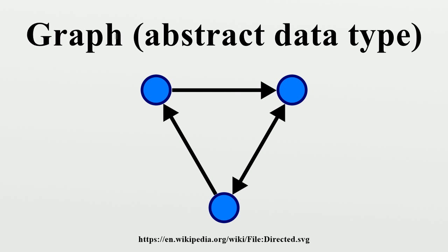The vertices may be part of the graph structure, or may be external entities represented by integer indices or references. A graph data structure may also associate to each edge some edge value, such as a symbolic label or a numeric attribute.